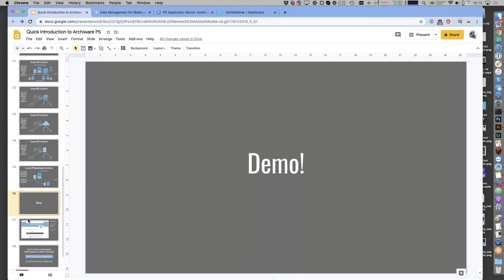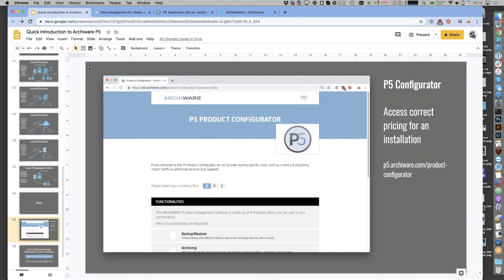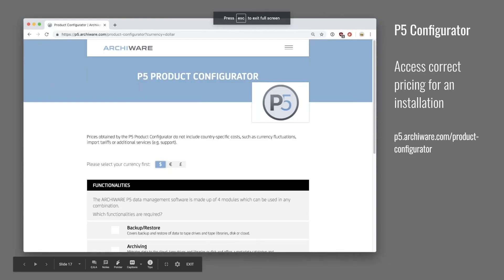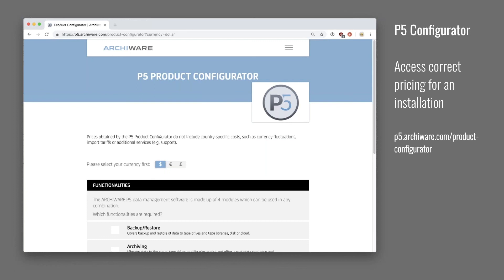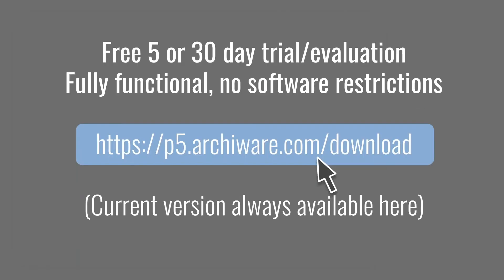Jumping back to the slides: if you're wondering how much this costs, visit the Arkyware website at p5.arkyware.com, where there's a price configurator in dollars, euros, and pounds. You tap in the functionality you're interested in and arrive at list prices. Via the download page, you can grab the latest installer — or install via the store if you have a QNAP — and request a 5- or 30-day fully functional trial license. You can connect it to your tape hardware or cloud storage and have a play before you buy.